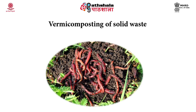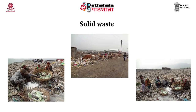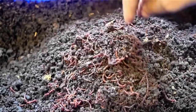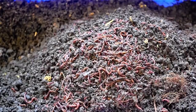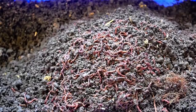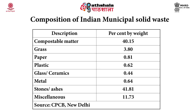It is very difficult to give a composition to solid waste because it is produced by diverse activities. But the Central Pollution Control Board, New Delhi has given an empirical composition to Indian municipal solid waste. According to that, about 40 to 45 percent of municipal solid waste is compostable and non-toxic in nature. This fraction can be used as raw material for vermicomposting, along with other biodegradable non-toxic solid waste from industries, commercial and agricultural activities.